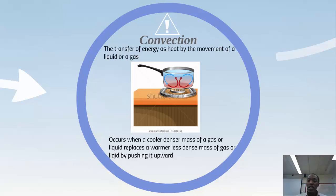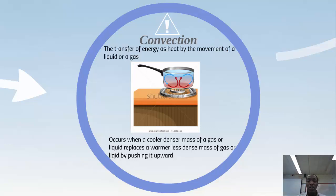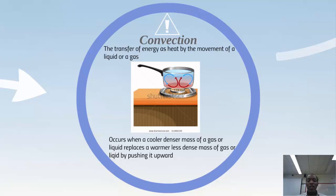When that cold water falls to the bottom it gets heated, and the water pushed up gets cooled — then it happens again. The more dense cold water pushes the hot water up, keeping that cyclic effect going as long as the heat source is maintained. That's convection.